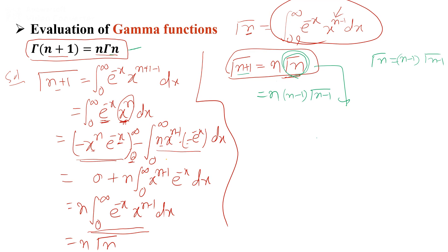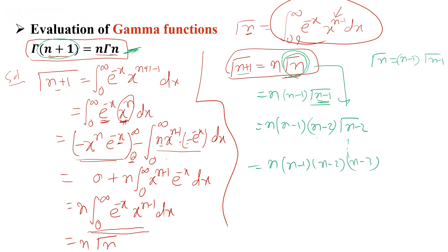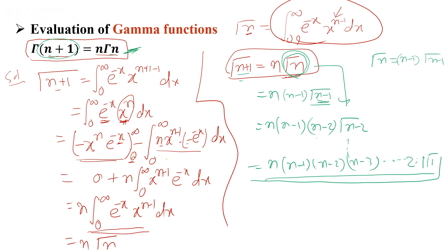Applying the same relation on Gamma(n-1) — substituting n-1 in place of n+1 — we get n·(n-1)·(n-2)·Gamma(n-2). Continuing similarly, we expand all the way down: n·(n-1)·(n-2)·(n-3)·...·2·1·Gamma(1). In this way you can expand the gamma function, similar to the factorial function.